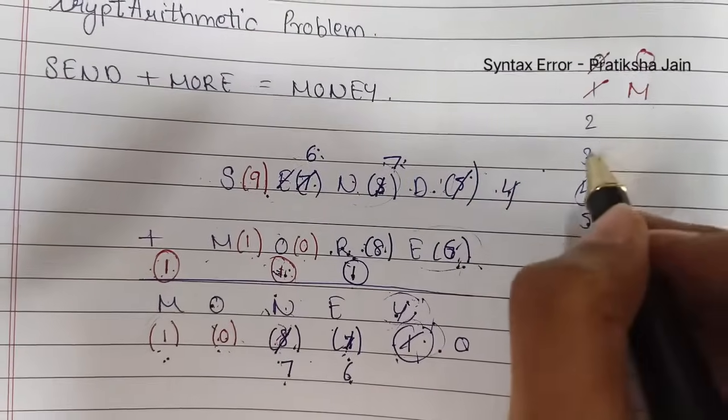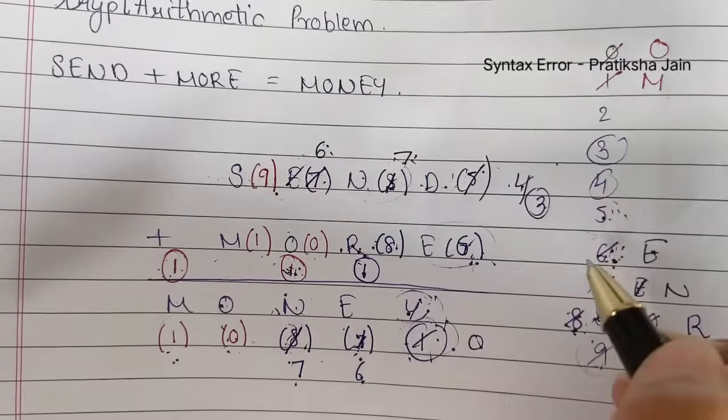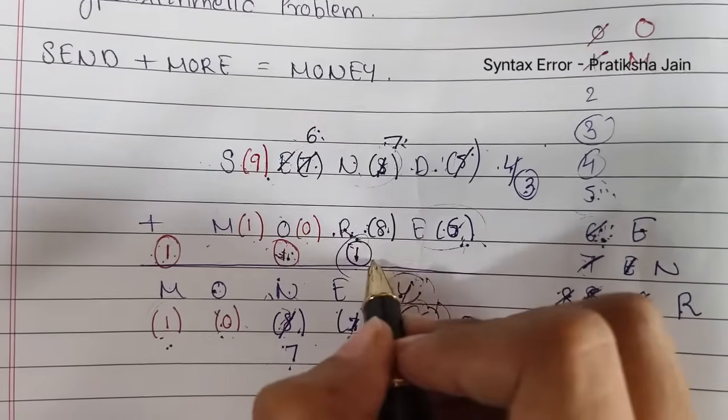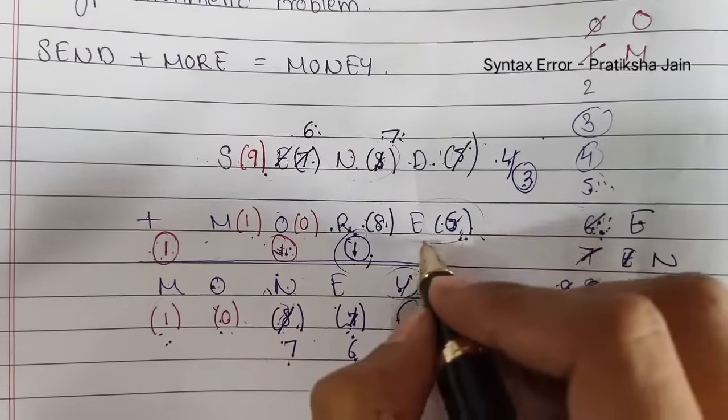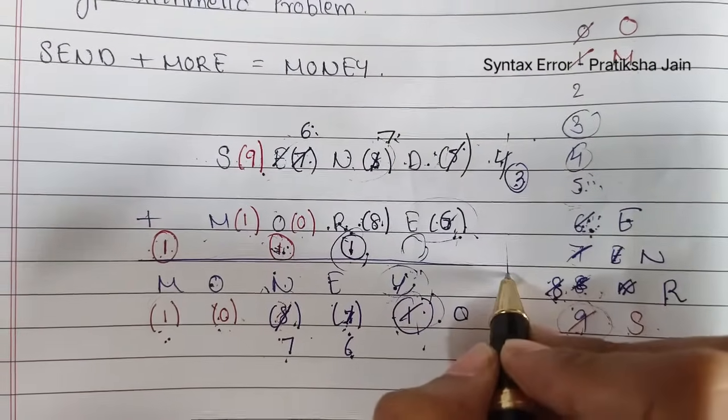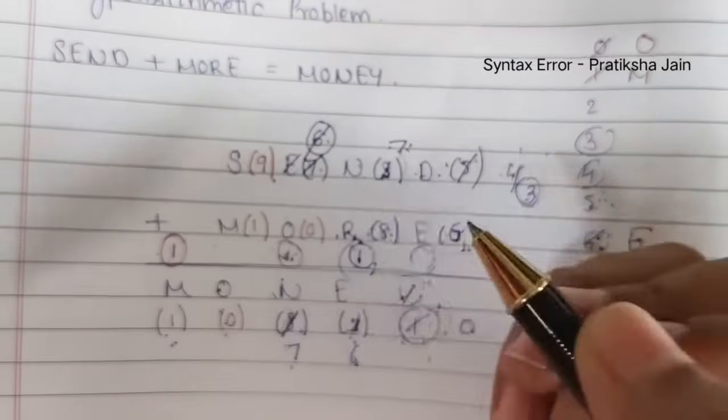If we take D as 3, so 6 plus 3 will give me 9. It will give me 9. Then how will I get the carry. And we cannot take any extra carry over here because there is nothing ahead of D and E. So we cannot assign E as 6.